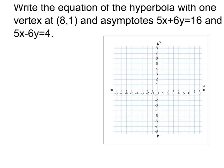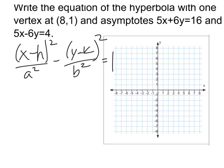If you think about the equation for a second, we have (x-h)² over a² minus (y-k)² over b² is equal to 1.